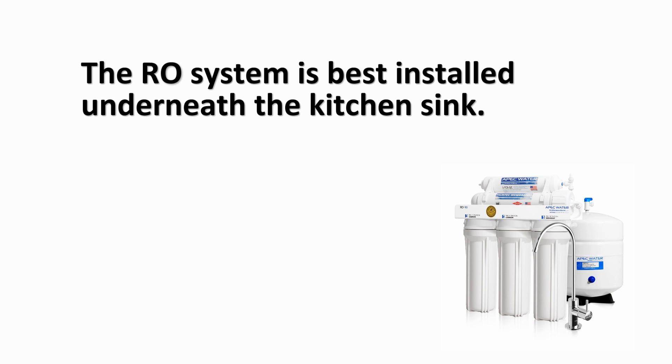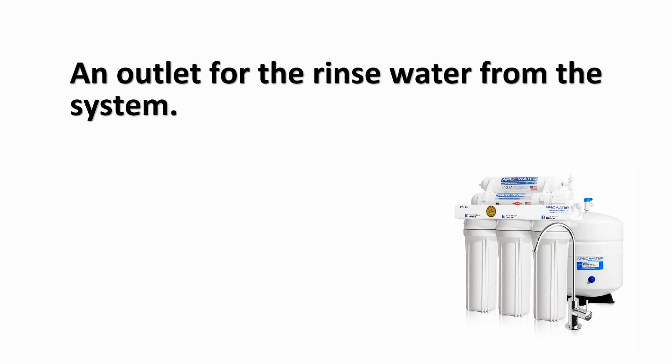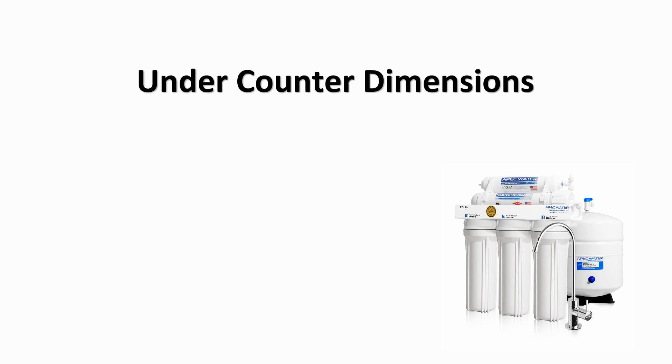The RO system is best installed underneath the kitchen sink. If there is not enough room, you can install the system where there is a cold water supply line with sufficient water pressure as well as an outlet for the drain water from the system. Make sure there is sufficient space for installation.